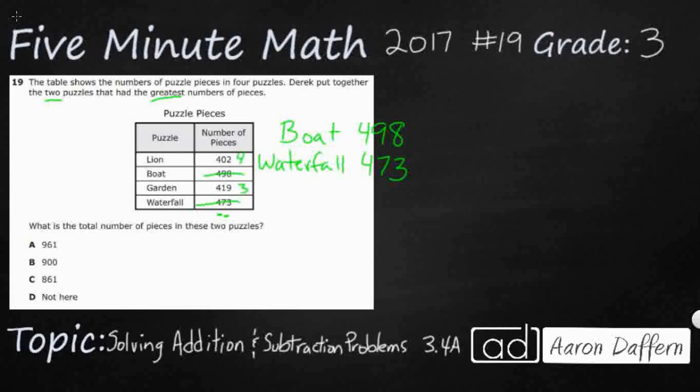But we do not need to because what we need to do is we need to add these two together. He put together the two puzzles that had the greatest number of pieces, and so what is the total number of just these two puzzles? And take a look at the answer choices real quick. One of them is not here, so we might not have our answer, but we'll use that as a last resort. So let's go ahead and just add these.